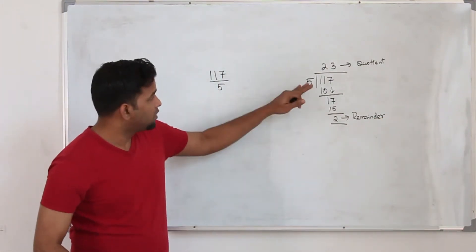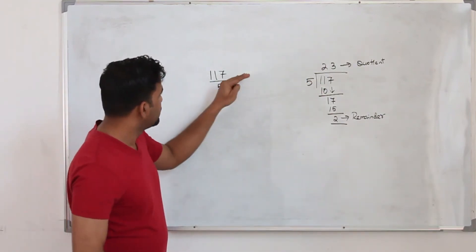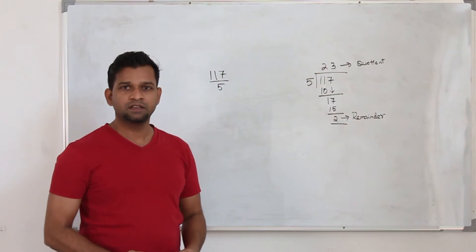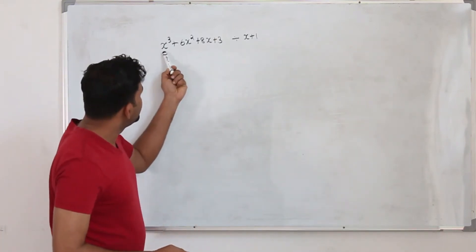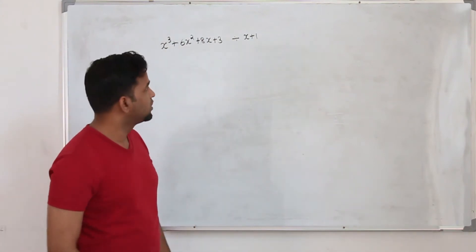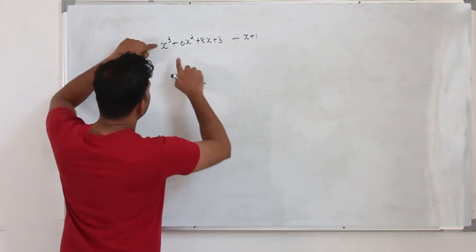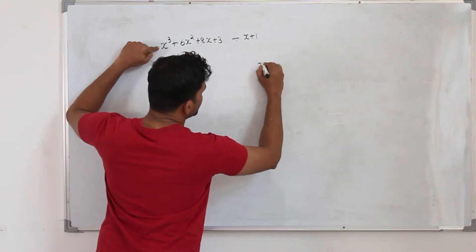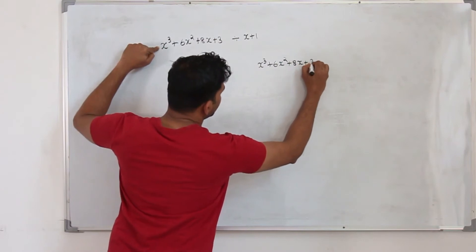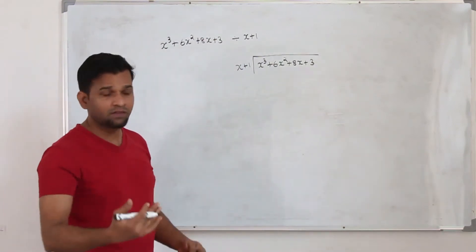This is the long division method, but instead of numbers we are going to use polynomials. When we want to divide a polynomial by another polynomial we are going to use the long division method. So now we are going to divide this polynomial of degree 3, x³+6x²+8x+3, by this linear factor x+1 — same like dividing 117 by 5.